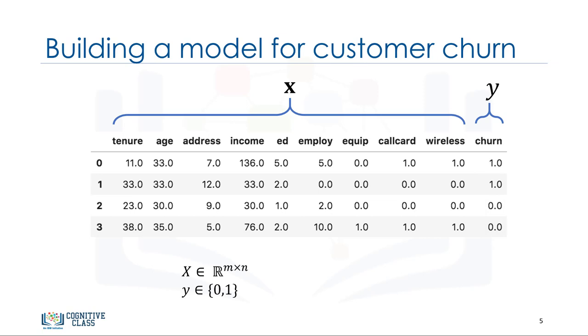Given that, let's start to formalize the problem. x is our dataset in the space of real numbers of m by n, that is, of m dimensions or features and n records. And y is the class that we want to predict, which can be either 0 or 1.